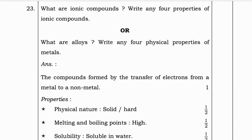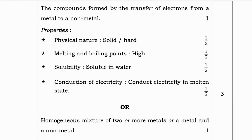Next question: What are ionic compounds? Write any four properties of ionic compounds. Ionic compounds are formed by the transfer of electrons from a metal to a non-metal. Properties: physical nature is solid and hard; melting points and boiling points are high; they are soluble in water; and they conduct electricity in the molten state.